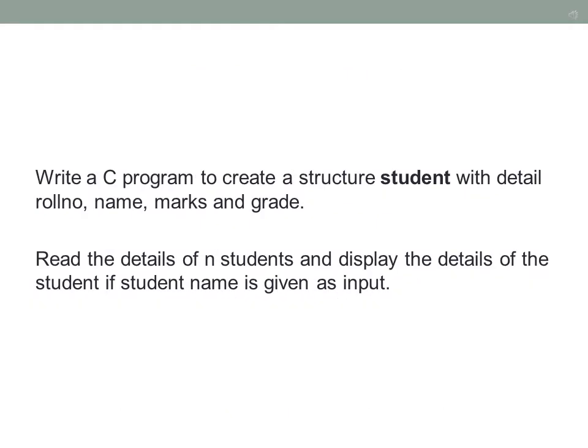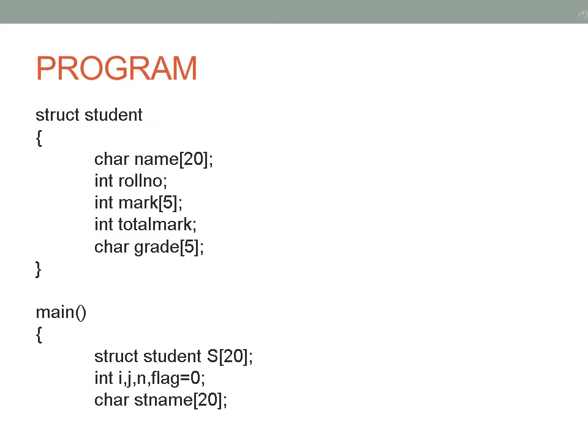For the first question, we write a C program to create a structure student with details: roll number, name, mark and grade. We have to read the details of n students and display the details of a single student when the name is given as input. We create a student structure with name as a character array that can store up to ten characters. Roll stores the marks of five subjects. Total mark adds up all the marks. When the total mark is greater than 250 we assign the grade pass, else we assign it as fail.